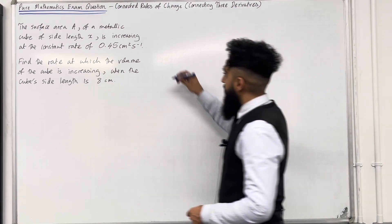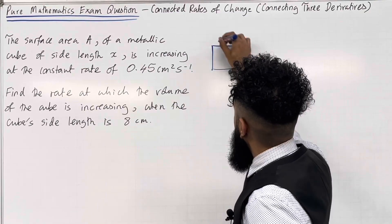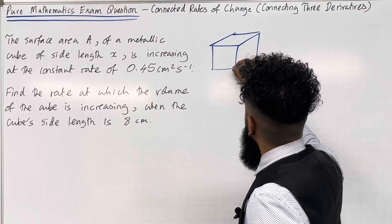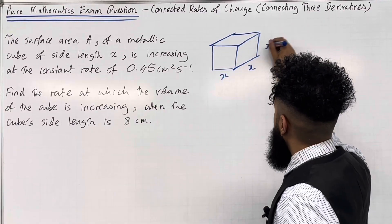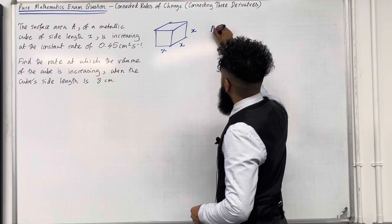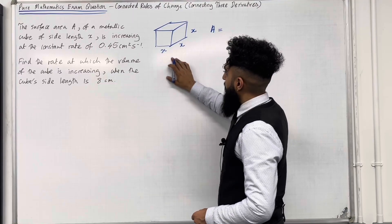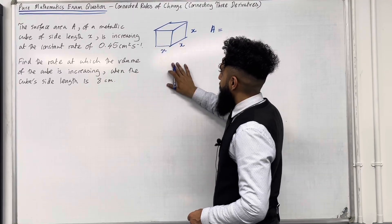I'm going to start off by drawing a cube. So I've got a cube, side length X, so we've got X by X by X. A is the surface area of the cube. The area of one face is X times X, which is X squared.